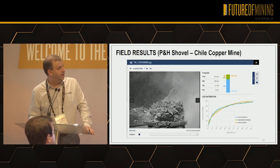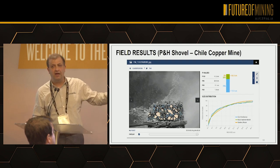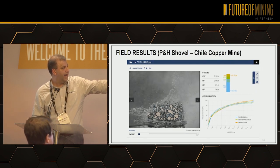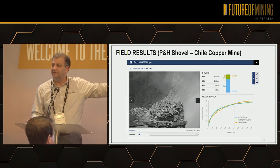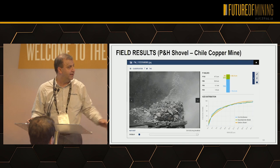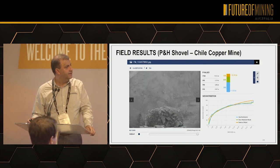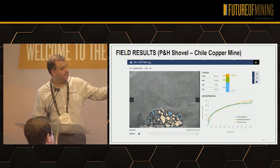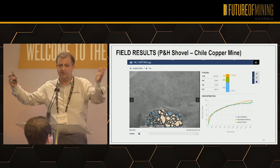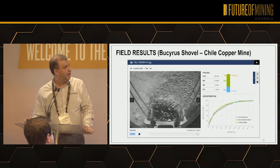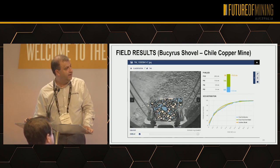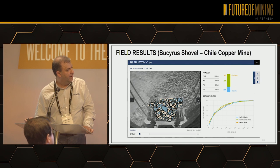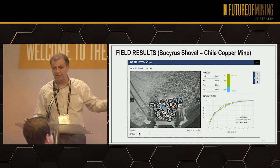A Chile copper mine with a P&H cable shovel. You can see — I don't want to claim AI is doing a perfect job, there are shortcomings — but the key thing in that image is we avoided the teeth, because in our old algorithm the teeth were often getting picked up. Here's another image from the Chile mine; it's quite good. Remember, it's using the size of the bucket for scaling — if the bucket is five meters, we use that. And this is a Bucyrus shovel; it did a decent job.